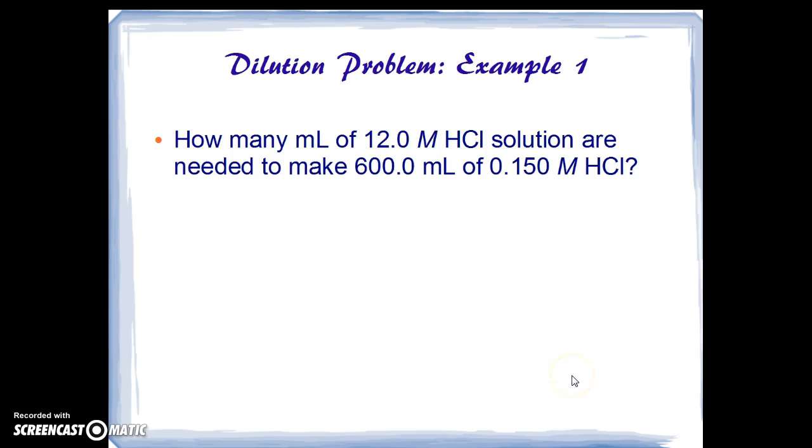So let's look at our first example. How many milliliters of 12 molar hydrochloric acid solution? And that's a standard solution that you get in one of these bottles from the manufacturer. How many milliliters are needed to make 600 milliliters of 0.150 molar hydrochloric acid?